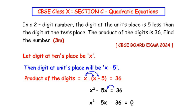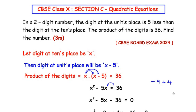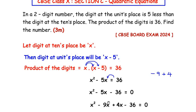Now we need to factorize this expression. We need to find two factors of 36 such that their product is negative 36 and their sum is negative 5. Those two factors are negative 9 and positive 4: multiplying them gives negative 36, and adding them gives negative 5.